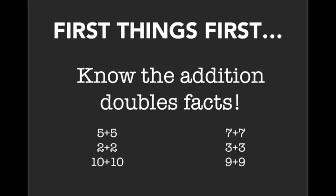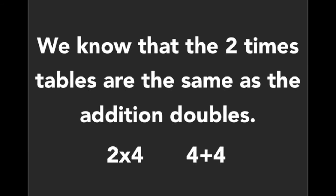So now that we know the addition doubles facts, your students can do the 4 times tables. Before they get to the 4's, they've obviously already learned the 2's. We know that the 2 times tables are the same as the addition doubles. In other words, the equation 2×4 can actually be thought of as 4+4 because you're doing 2 groups of 4. This is prior knowledge for our students.